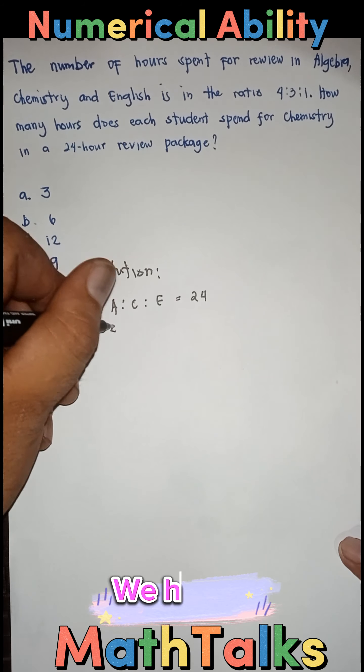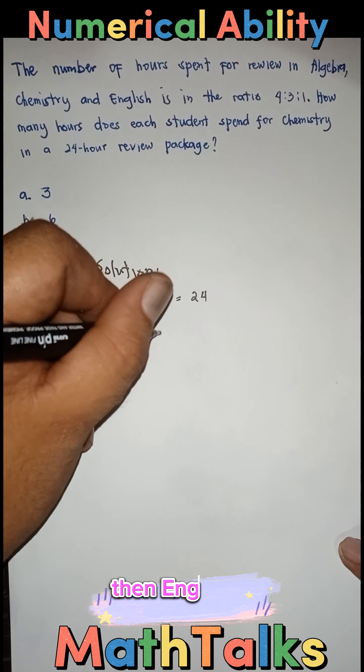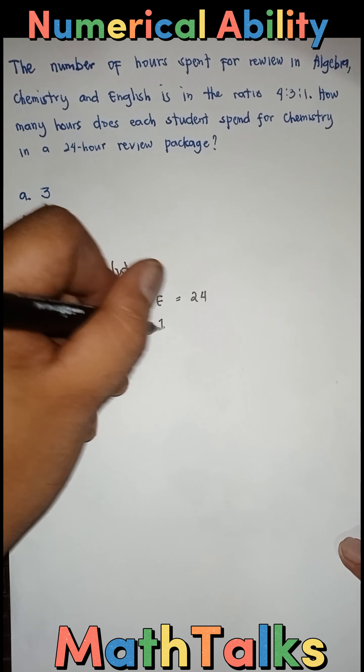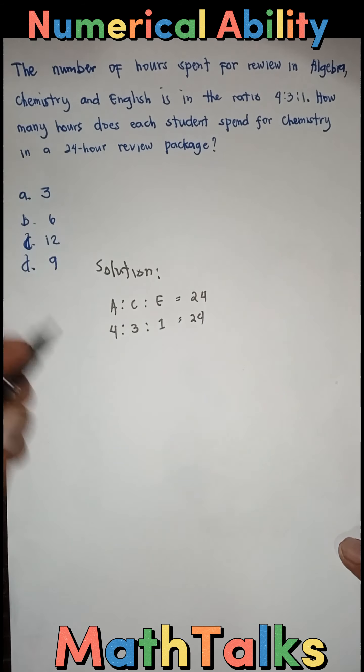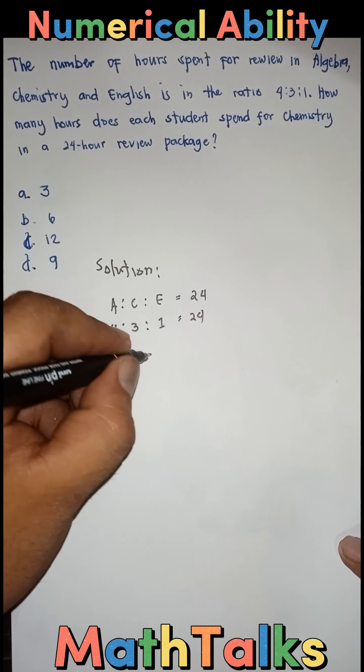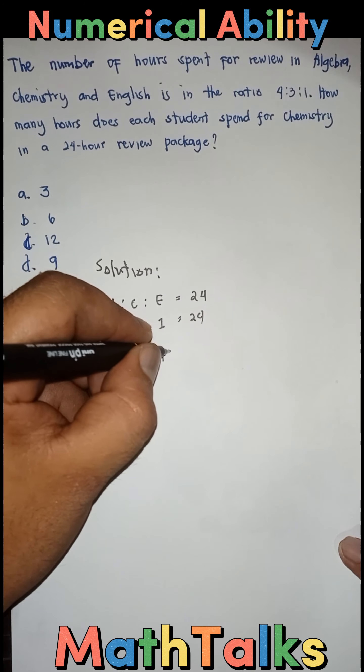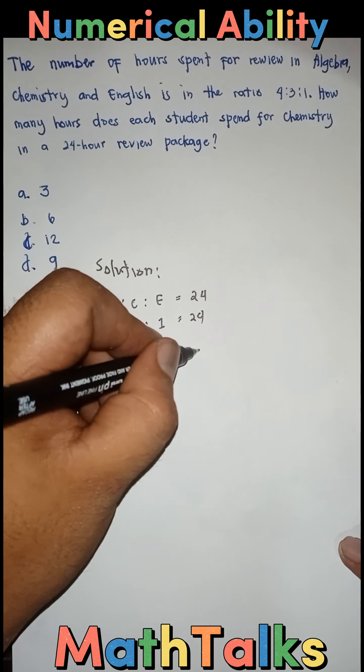So, sa Algebra, we have 4. Chemistry, 3. And then, English is 1. So, gagawa na tayo ng equation na ito equals 24. So, equation: 4X plus 3X plus X stands for 1. Okay na yan. Equals 24.